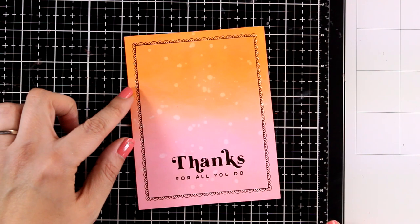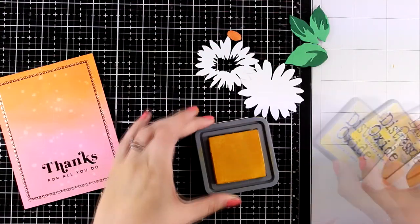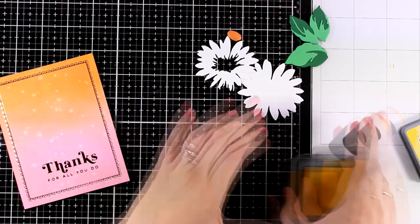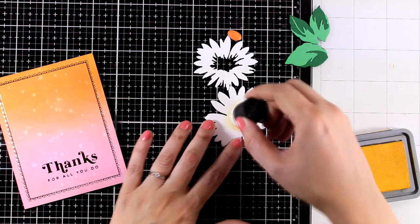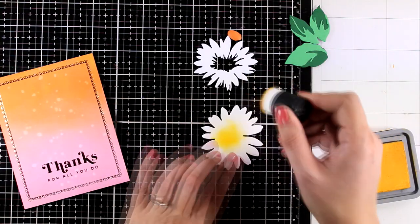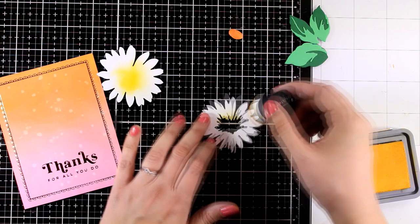Now at this stage you have a beautiful background with a sentiment and all you have to do is to just stick a focal point on top. I decided to go with a flower that I had in my stash and I die cut it. You can go with any flower, stamp, or die that you have in your stash. It would look just beautiful.